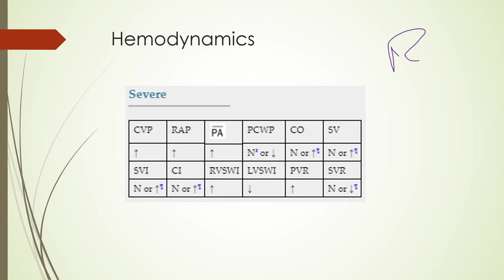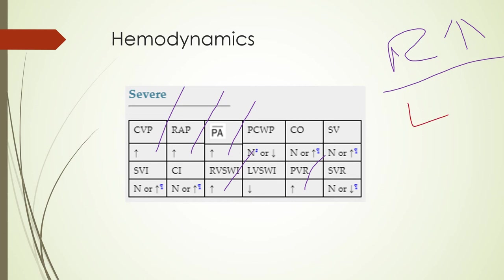For hemodynamics: right-sided heart pressures are elevated — CVP and right atrial pressure are elevated, mean pulmonary artery pressure is elevated, right ventricular stroke work index shows the right side of the heart is working harder, and pulmonary vascular resistance is increased. A lot of this is because of hypoxic pulmonary vasoconstriction — since there's not a lot of oxygen getting into the blood vessels, you get hypoxic pulmonary vasoconstriction causing all of these right-sided pressure increases.